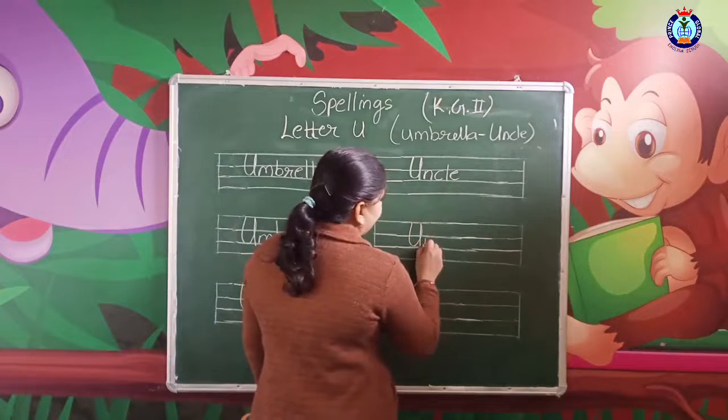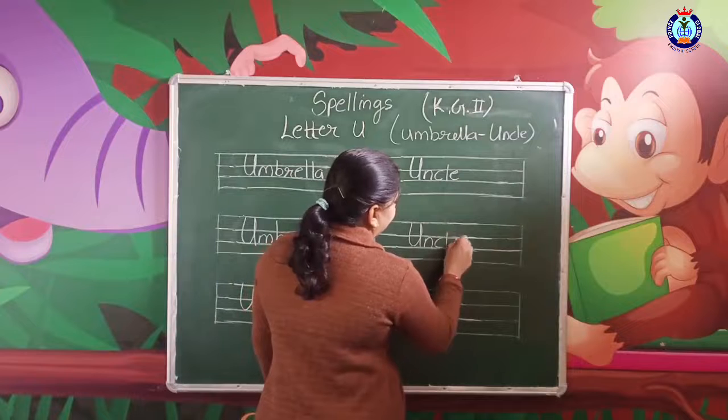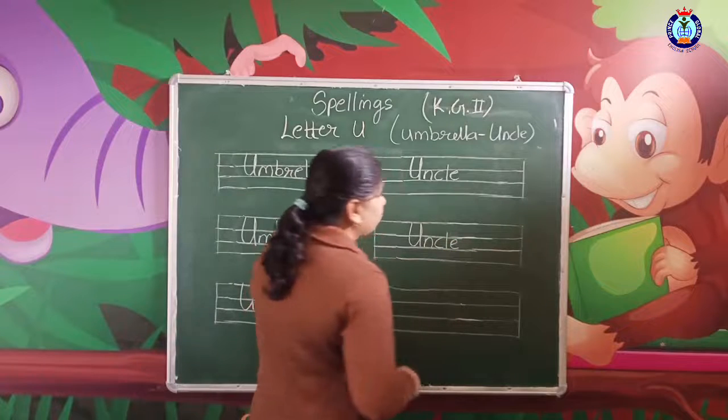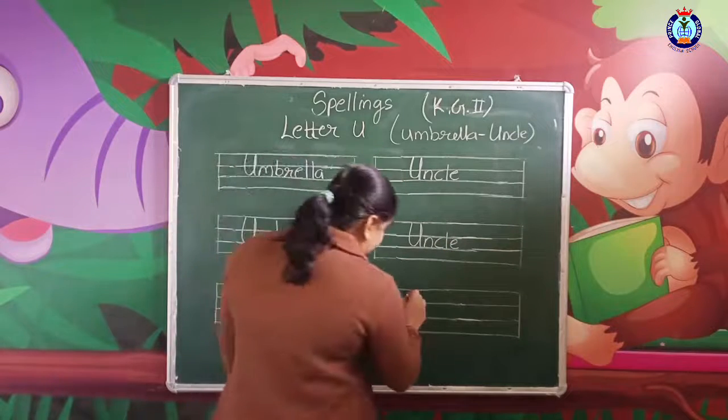U, C, L, E. U, N, C, L, E. Uncle. This is the wrong thing here. U, N, C, L, E. Uncle.